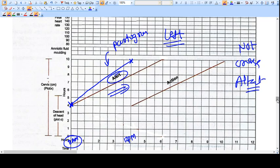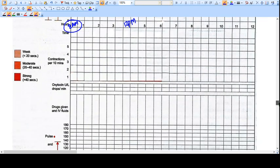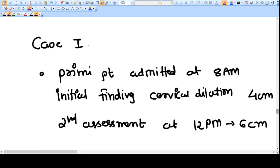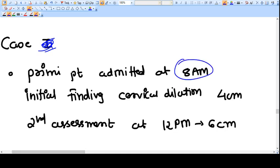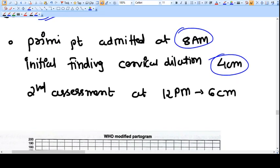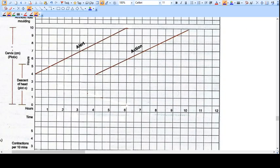Second case scenario: a primpara patient, 8 AM admission. The initial assessment on admission was 4 centimeter cervical dilatation, so the patient is now in active labor and you need to start the partogram. 4 centimeters at 8 AM.